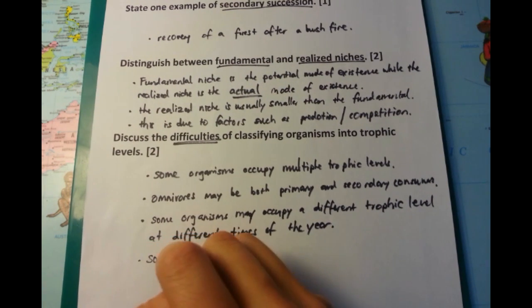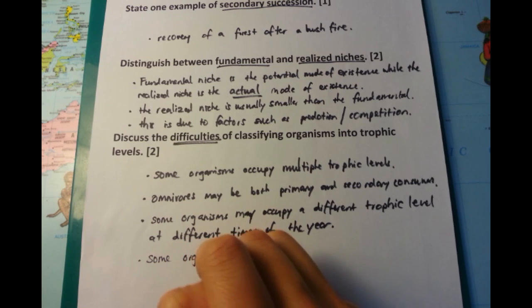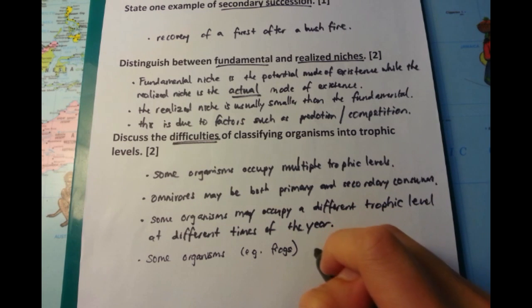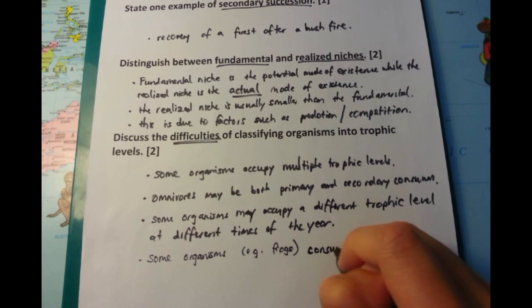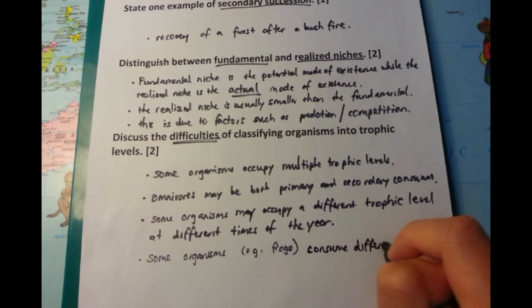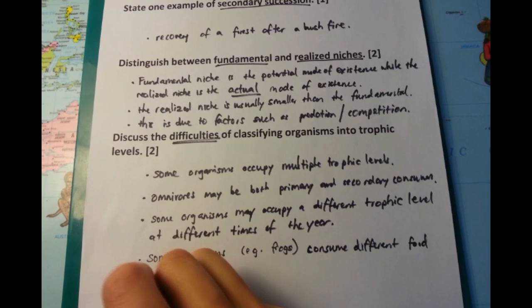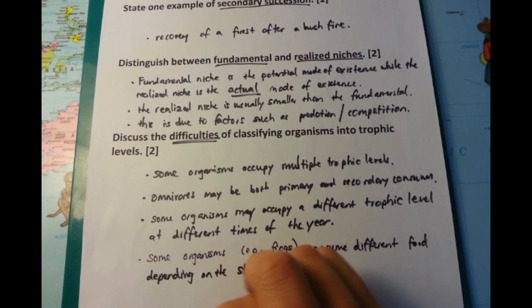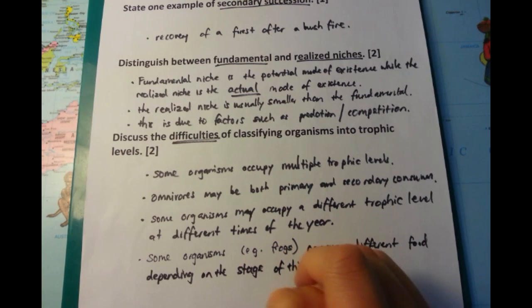But the final point I'm going to talk about is that some organisms, not including humans this time, they consume different kinds of food depending on the stage of their life cycle. So in the case of frogs and tadpoles, tadpoles would definitely have a different diet compared to frogs. And this would be similar for caterpillars and moths, or caterpillars and butterflies as well. So another limitation of the trophic level way of classifying things.